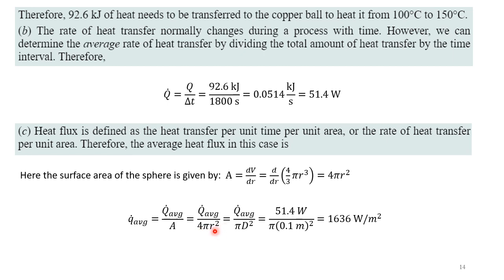So we found that Q dot average was 51.4 watts, pi times D. He gave us D, so we could calculate it as 1,636 watts per square meter.